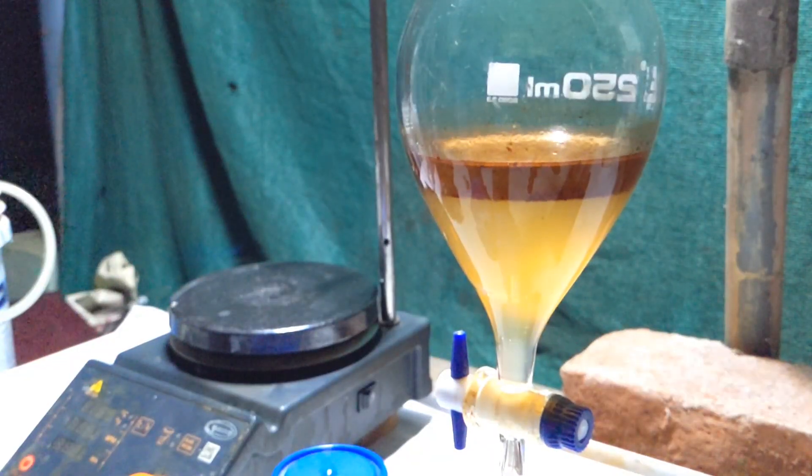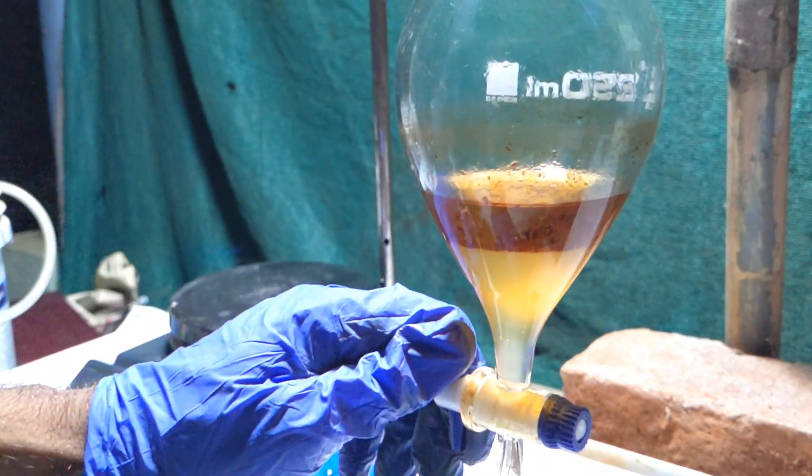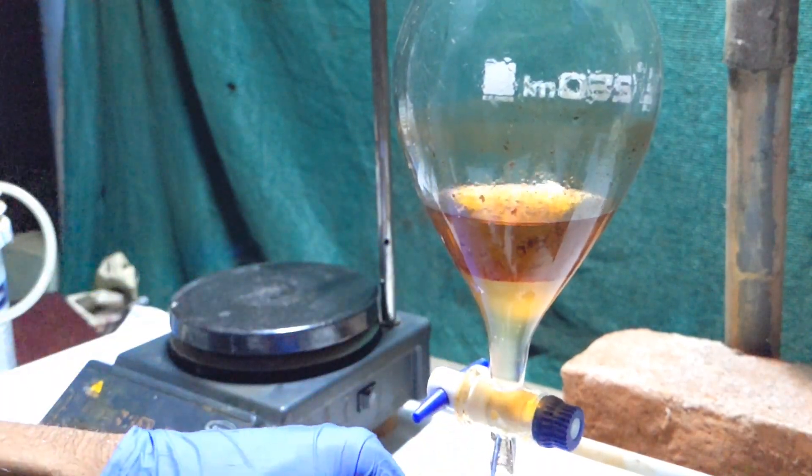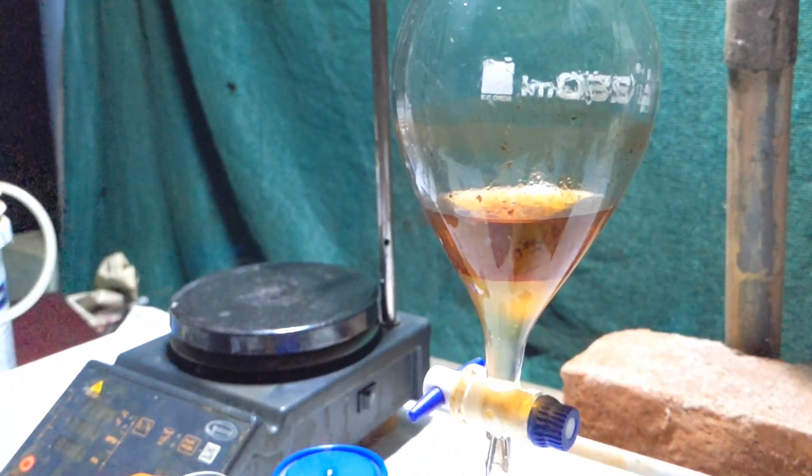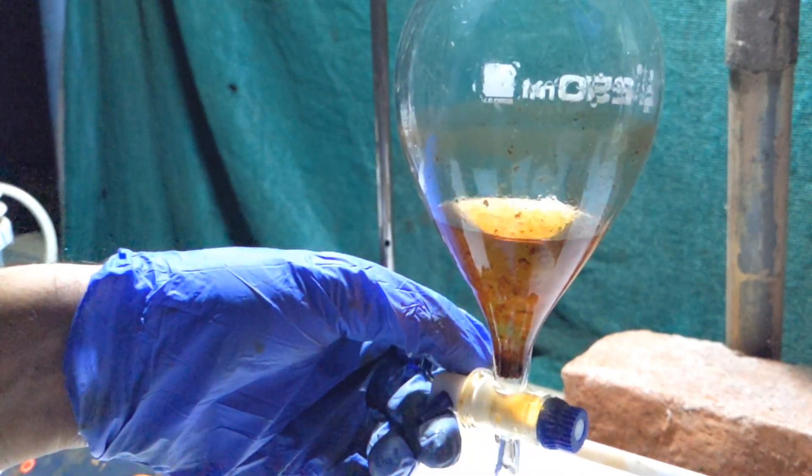Then the funnel was clamped again and the layers were allowed to separate. The upper layer is the ether layer and the lower layer is the aqueous layer. The ethereal layer will contain the benzyl alcohol and the aqueous layer has the potassium benzoate.